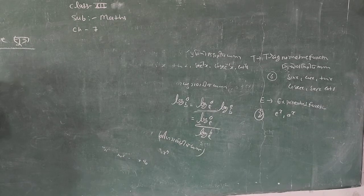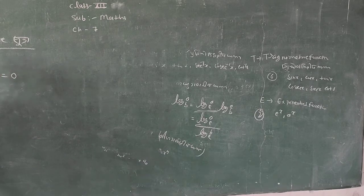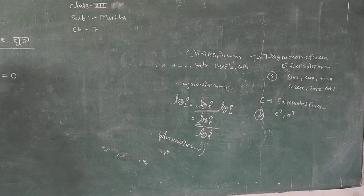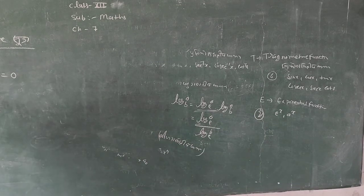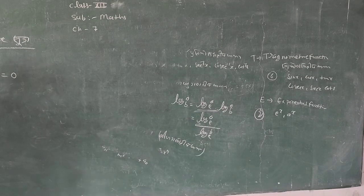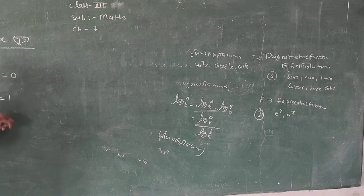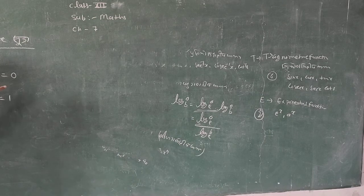Formula 1: Differentiation of a constant function is equal to 0. How do we know something is constant? With variable x, anything other than x is constant. So differentiation of constant = 0. Formula 2: Differentiation of x is equal to 1. x with respect to x is 1; t with respect to t is 1.